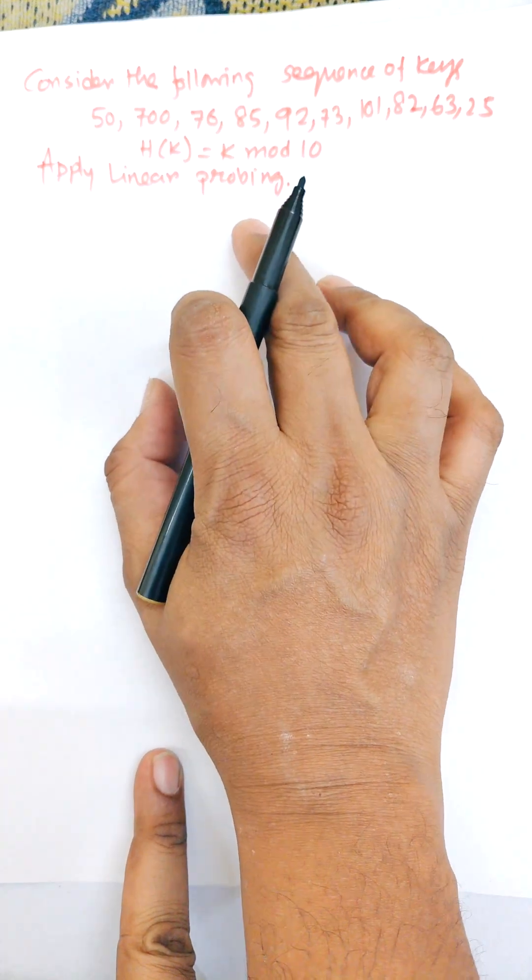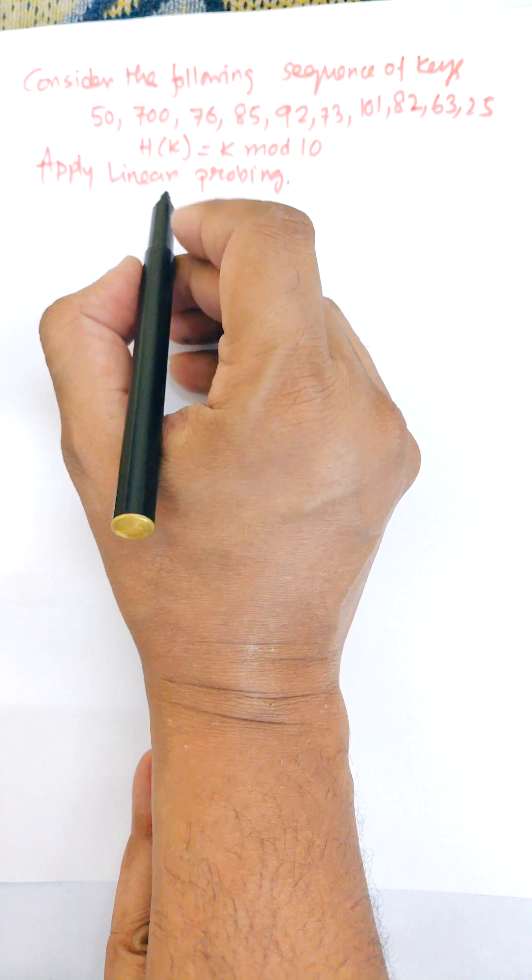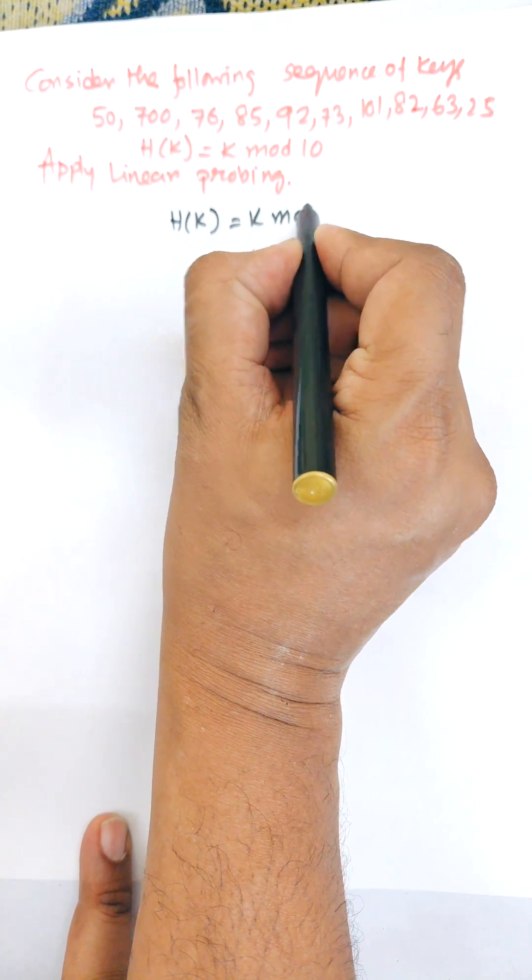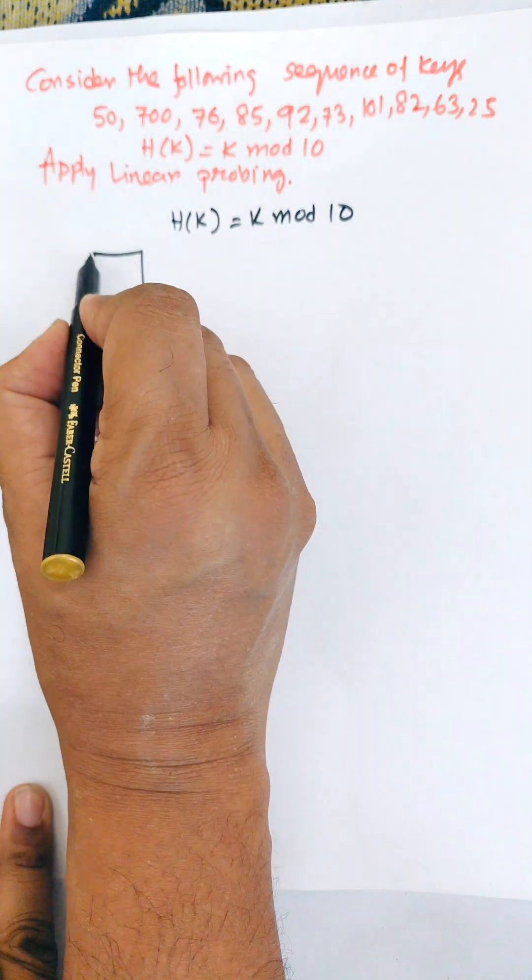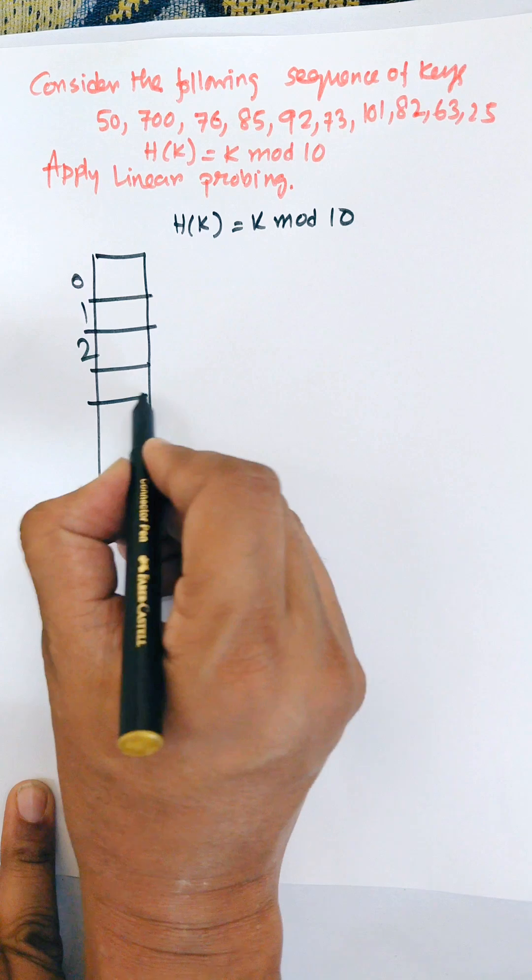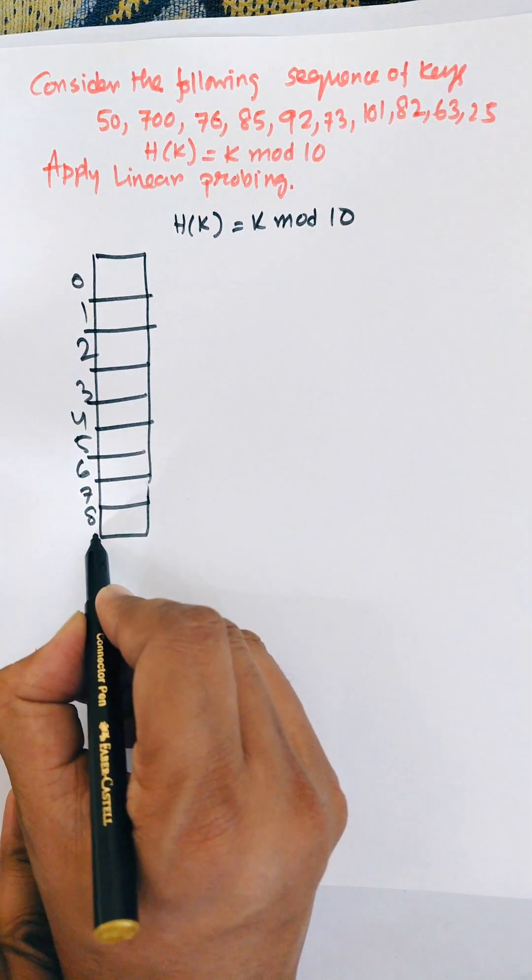In this video, I am going to apply linear probing for the following sequence of keys. Here, h(k), the hash function, equals k mod 10. There are 10 memory locations: memory 0, 1, 2, 3, 4, 5, 6, 7, 8, and 9.